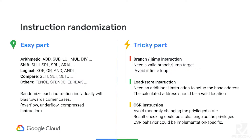For instruction randomization, the easy part is arithmetic, shift, logical, and comparison instructions — you just randomize them individually to hit all corner cases. The tricky part involves branch and jump instructions, where you need a valid target and must carefully avoid infinite loops. For load/store instructions, you need additional instructions to provide a valid base address. For CSR instructions, you don't want to randomly change your architectural state to something unwanted — you want to control them in some way.